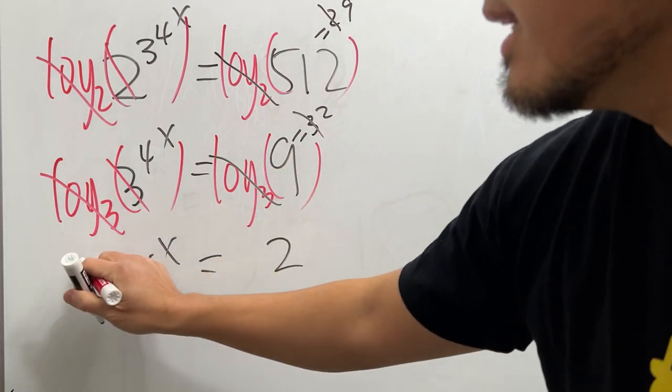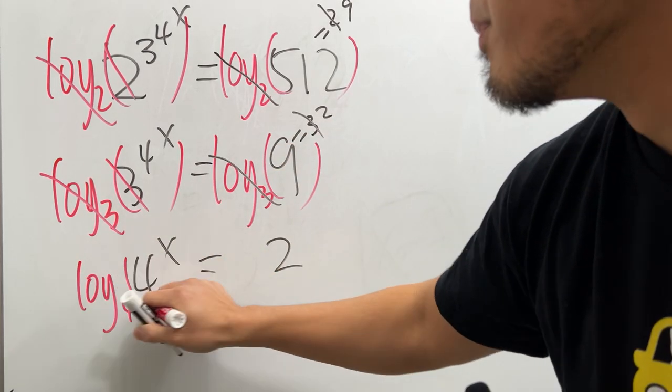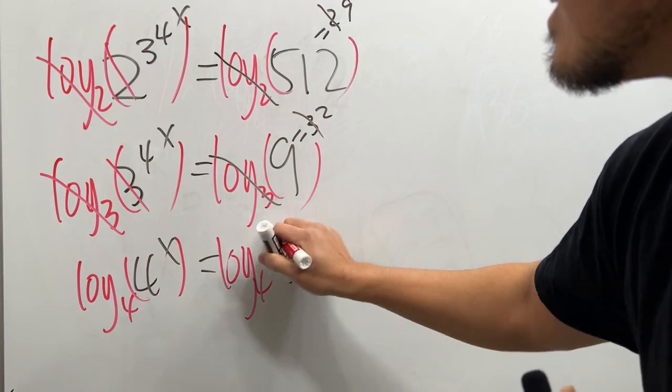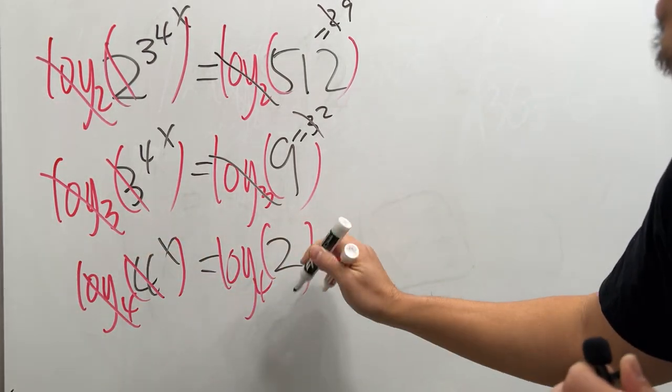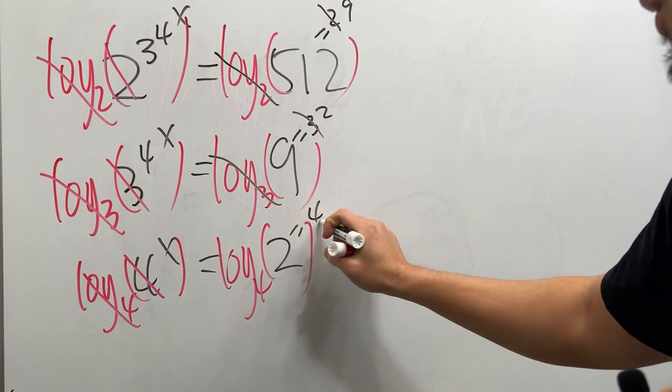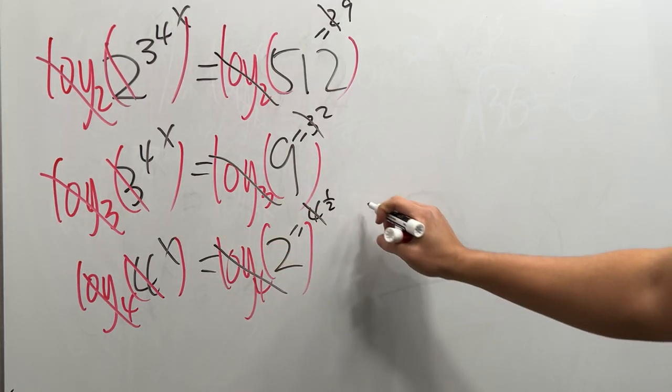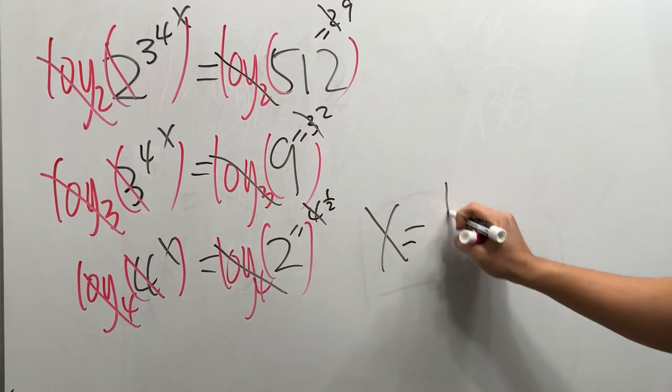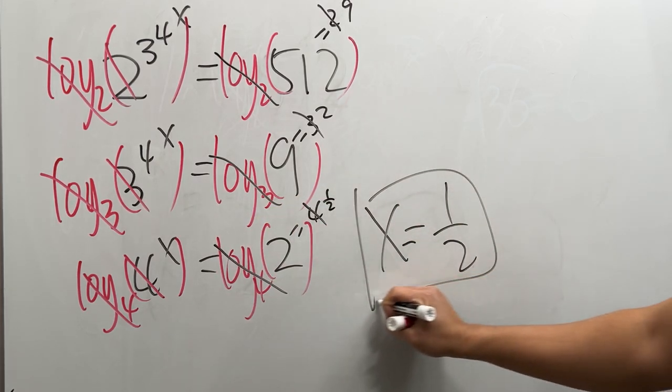And then let's take log base 4 on both sides so that on the left hand side this and that will cancel. And then 2 is the same as 4 to the one half power so that this and that can cancel. That means x equals one half, and then we are done.